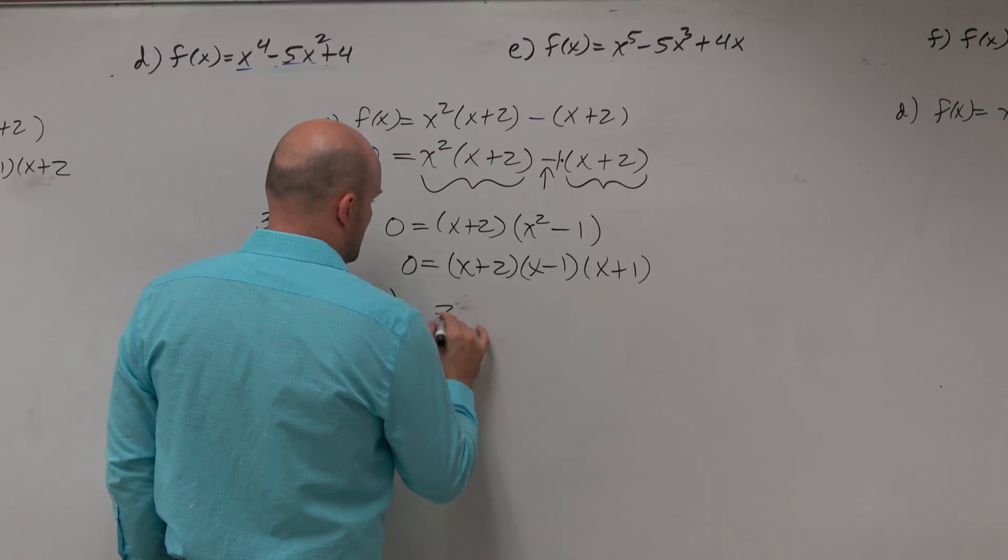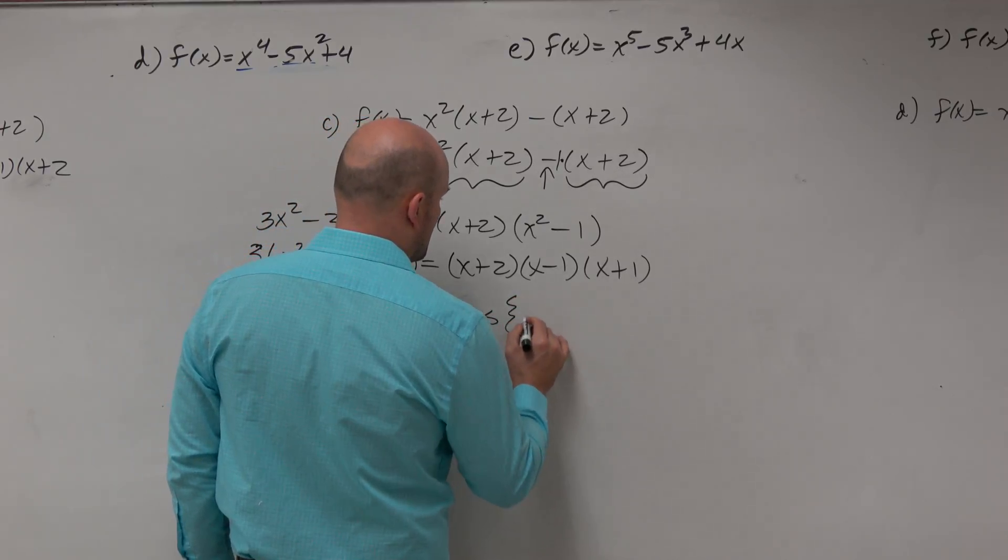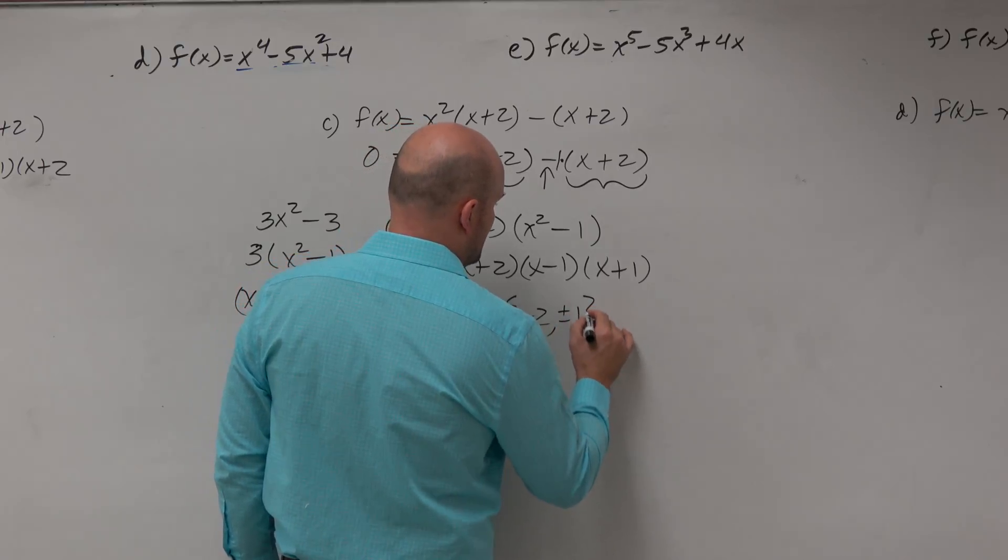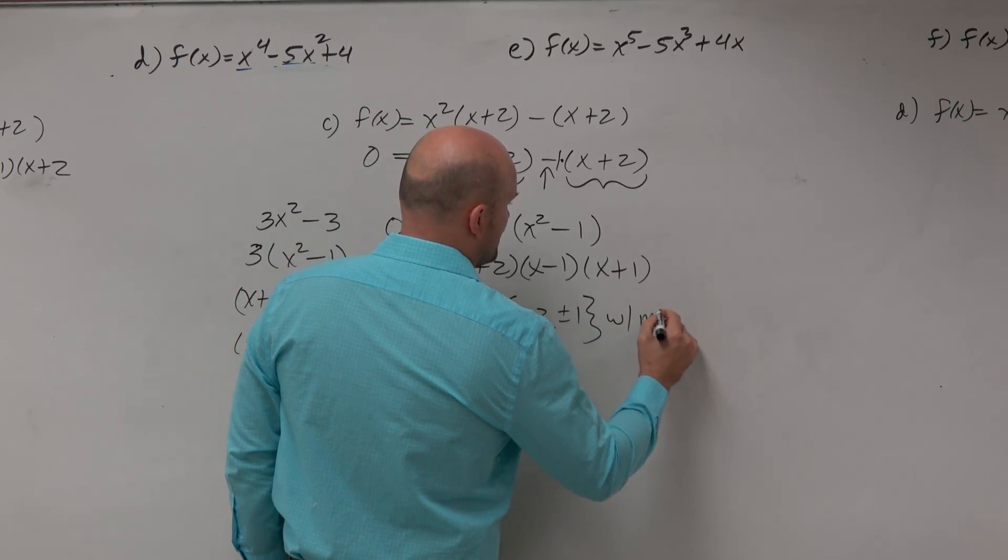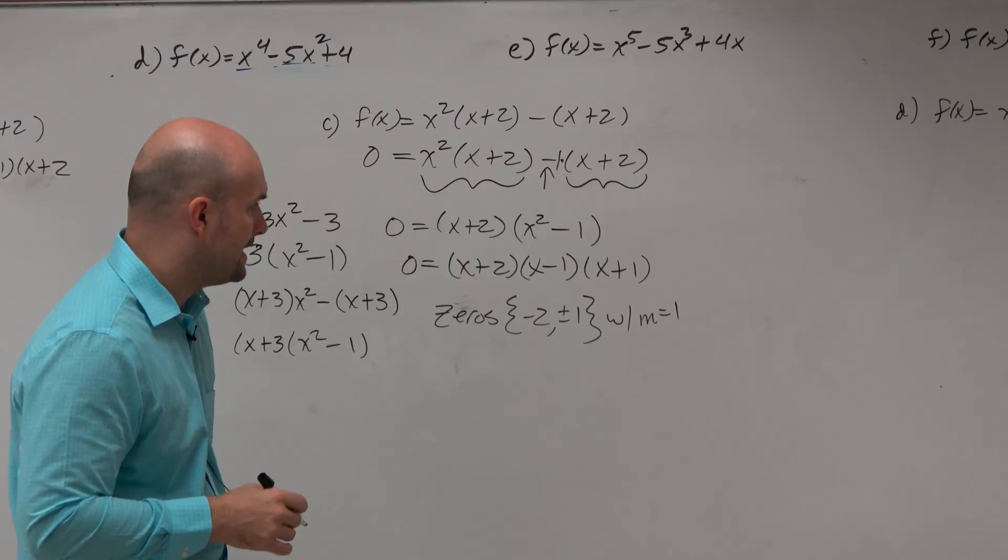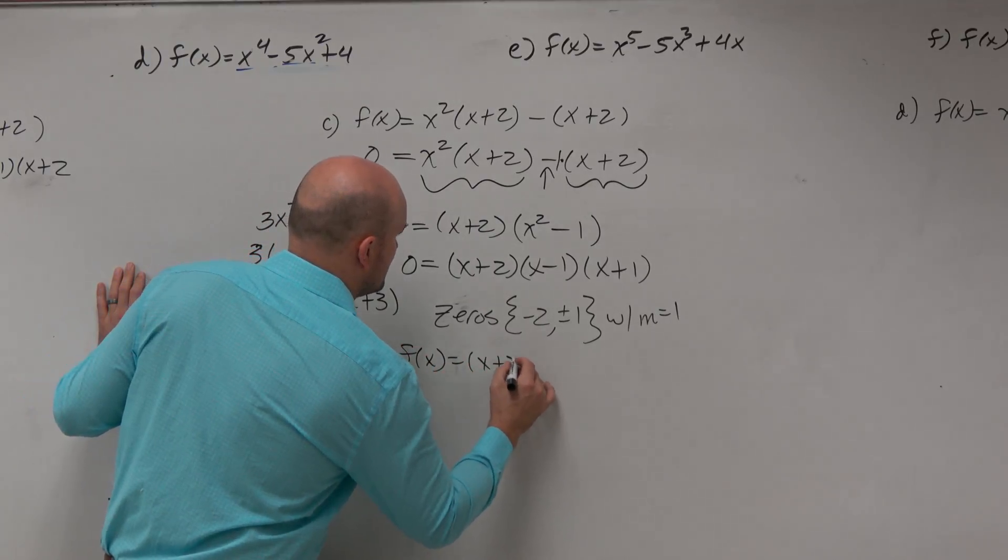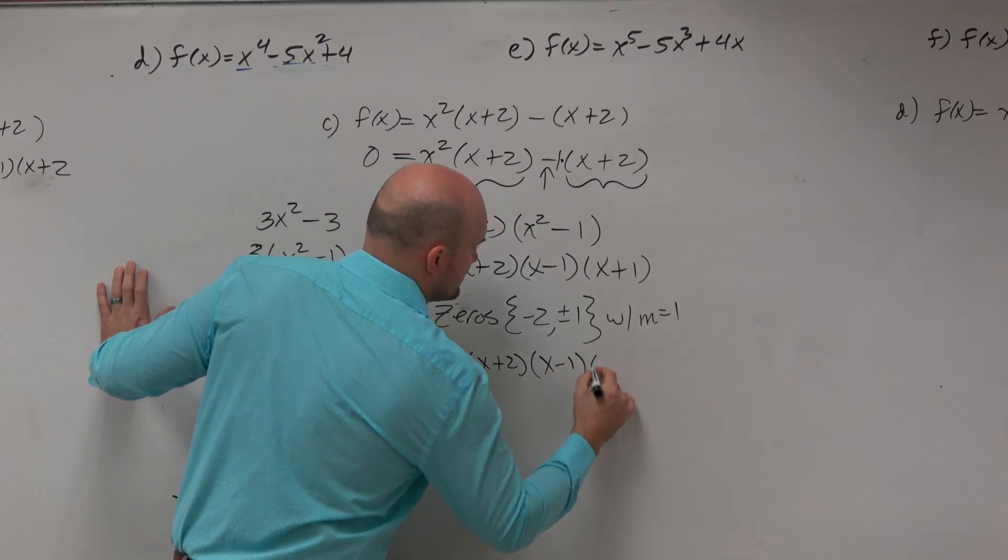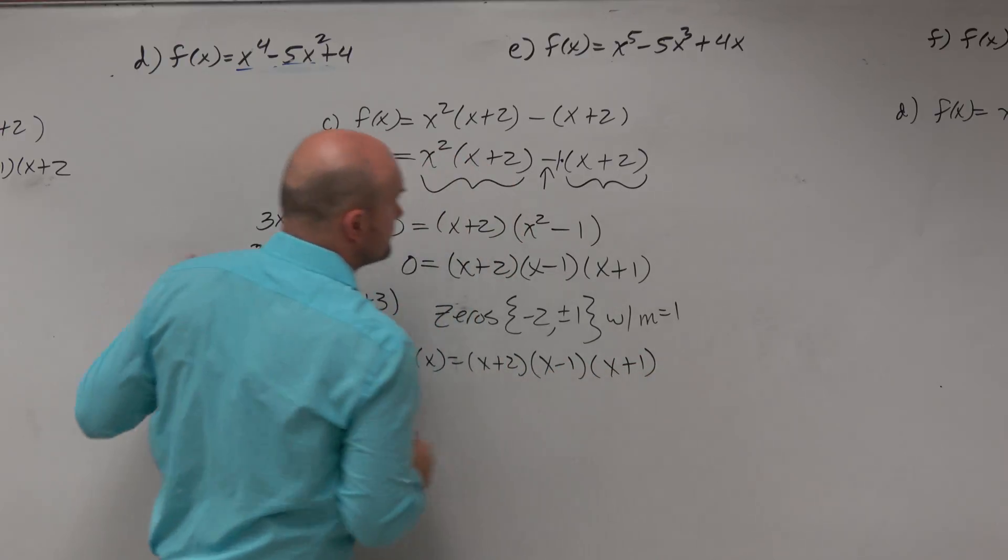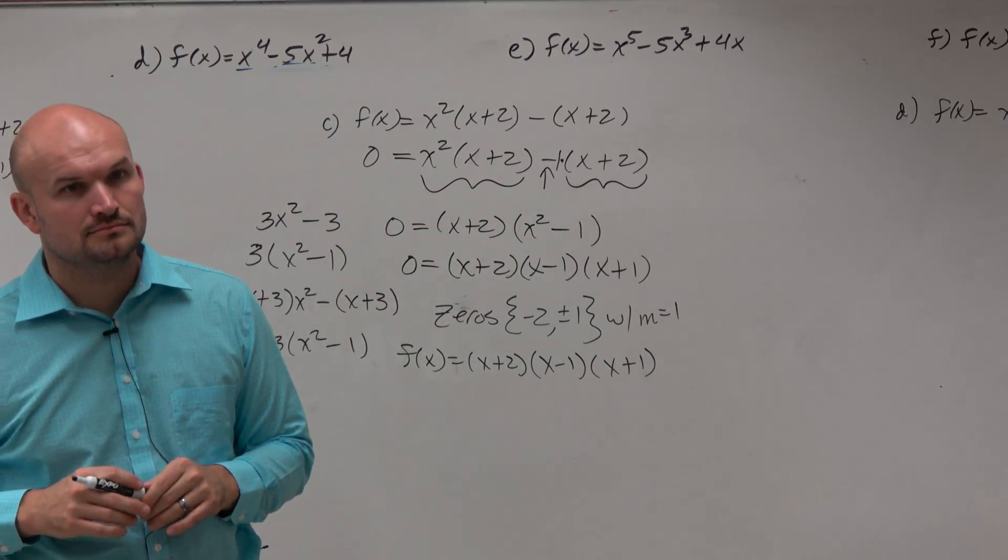Oh, let's write this. The zeros are negative 2 plus or minus 1, all with a multiplicity equal to 1, OK? The linear factorization, again, is x plus 2 times x minus 1 times x plus 1. All right?